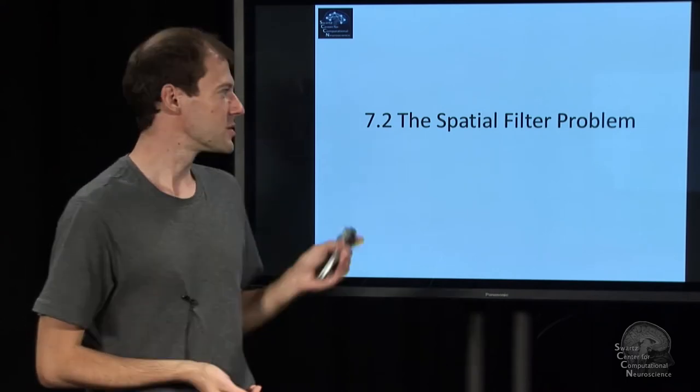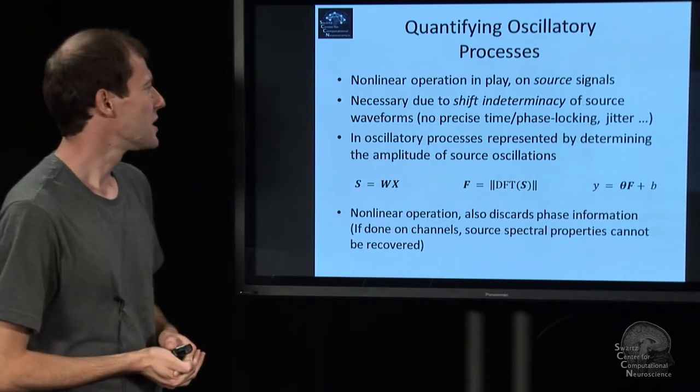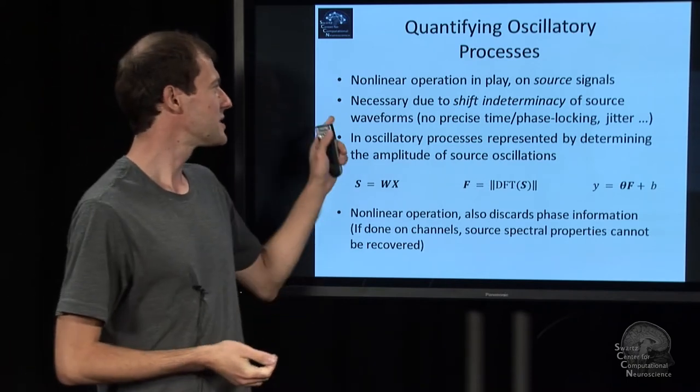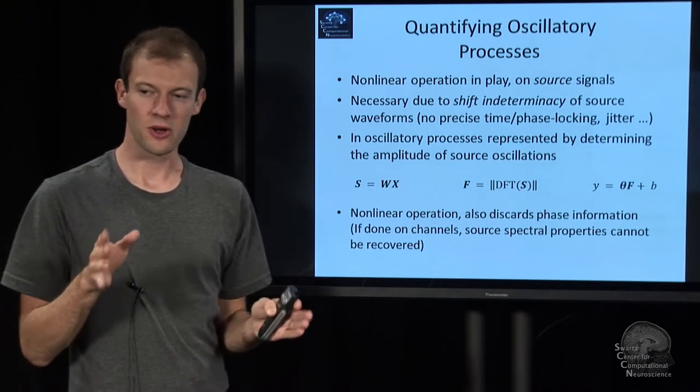And that problem is what we call the spatial filter problem. The problem is as follows. It's actually quite interesting. The problem is that there is somewhere in your analysis pipeline, somewhere in your data flow, there's a nonlinear operation.